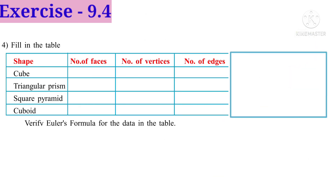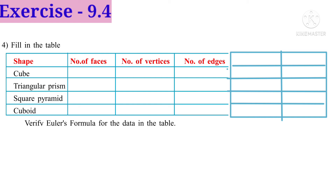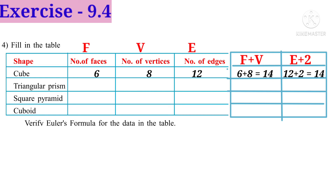Now Problem 4: Fill in the table and verify Euler's formula. The columns are F for faces, V for vertices, E for edges, F plus V, and E plus 2. For a cube: faces are 6, vertices are 8, edges are 12. F plus V equals 6 plus 8 equals 14, and E plus 2 equals 12 plus 2 equals 14 — both equal. For a triangular prism: faces are 5, vertices are 6, edges are 9. F plus V equals 5 plus 6 equals 11, and E plus 2 equals 9 plus 2 equals 11 — both equal.